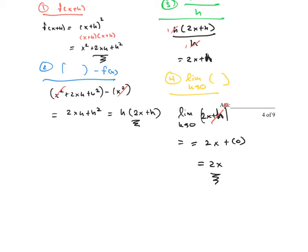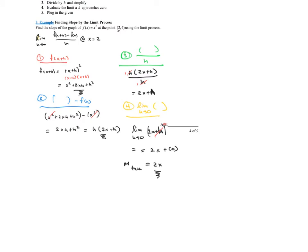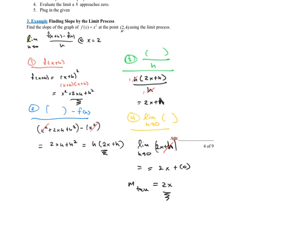What we just did was look at the graph of x², found the slope of the secant line between x and x+h — which was 2x+h — and then brought those two points closer and closer together by taking the limit as H approaches 0. That gives us 2x as the slope of the tangent line. But we wanted it specifically at x = 2, so that's a fifth part: plug in x = 2. The slope equals 2 times 2, which is 4. So the slope of the tangent line of x² at the point (2, 4) using the limit process is 4.